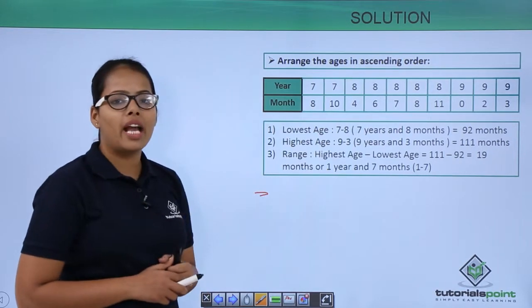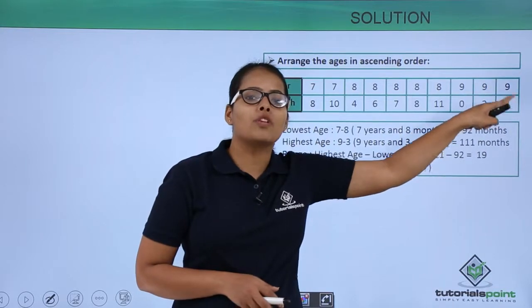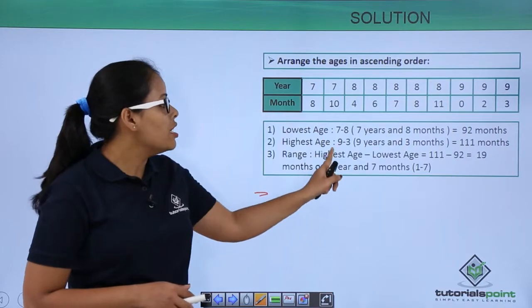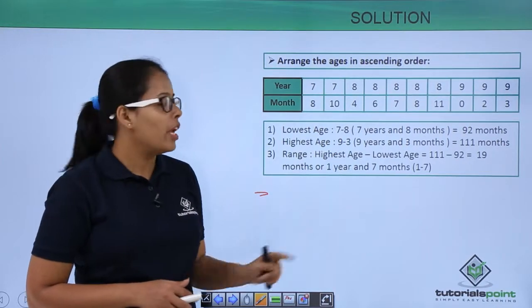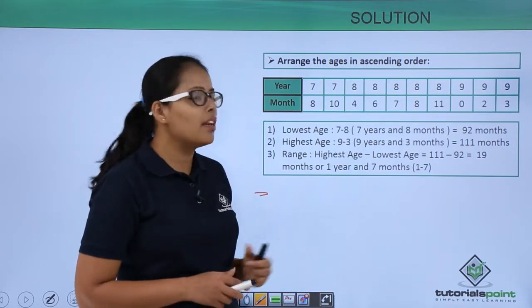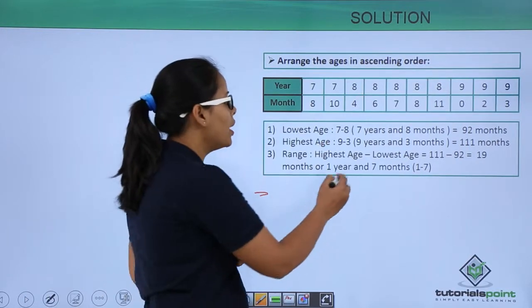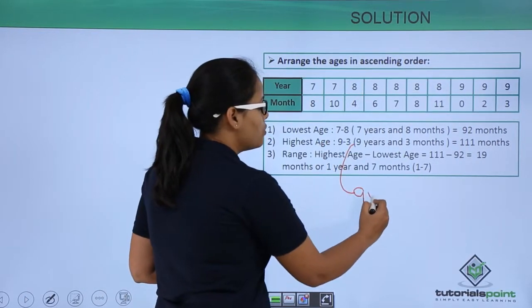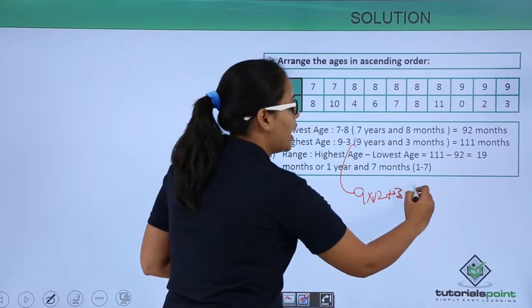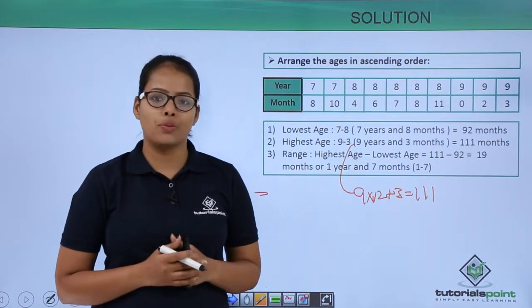Now how will you find out the highest age? As you know that in this ascending order the observation on your right hand side, extreme right hand side, will be highest age which is 9 years and 3 months. Here when you need to represent this age in months, you'll multiply this year by 12 plus 3 that will give you 111. What I am doing here I am just multiplying this with 12 and then adding it with 3 so that you can get 111 months.